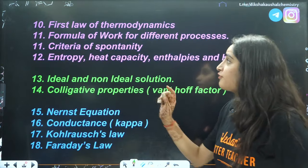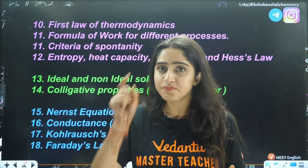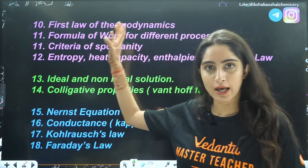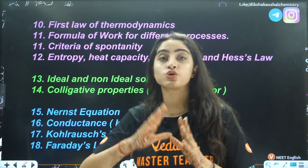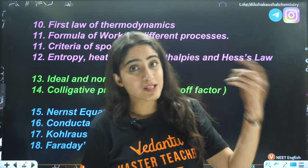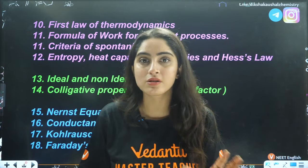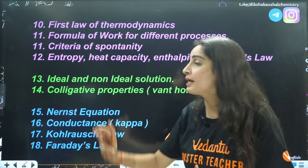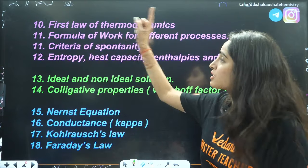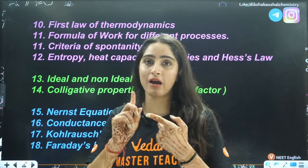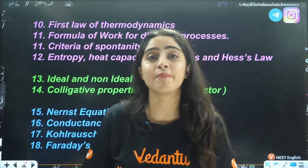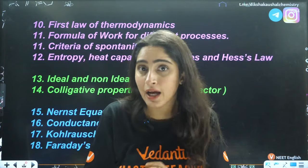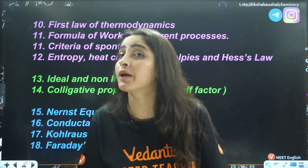Next is the first law of thermodynamics. A simple question can be asked on sign conventions — students often mix up physics and chemistry sign conventions, which is why the formulas differ. Most probably the question will be asked on the formula for work in different processes: isobaric, isochoric, isothermal, and adiabatic, both reversible and irreversible. For adiabatic, you need to know how to calculate the final temperature, and for isothermal, how to calculate the work done.